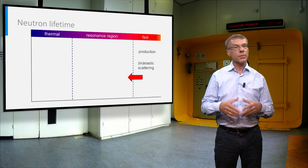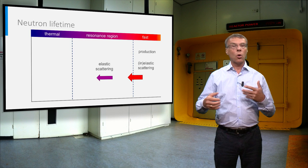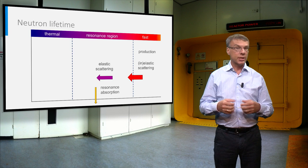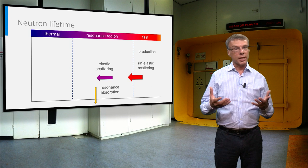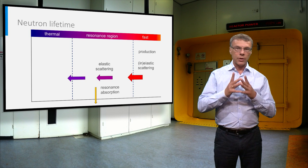Here, the neutron can lose energy via elastic collisions with a moderator, or it can be absorbed in the uranium-238 resonances. In the latter case, the neutron is lost for the chain reaction. Of course, this is also the case when a neutron leaks away from the reactor core.